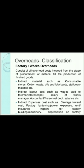Now we will read about the classifications of overheads. There are three types of overheads: factory overhead, office overhead, and selling and distribution overhead. Factory overhead consists of all overhead costs incurred from the stage of procurement of raw material till the production of finished goods. In factory overheads, all indirect expenses are incurred — like indirect materials such as consumable stores, cotton waste, oils, lubricants, etc.; indirect labor like wages paid to the storekeeper, salary of the works manager, etc.; and indirect expenses like carriage inward cost, factory lighting, rent, and insurance.